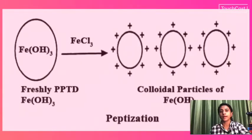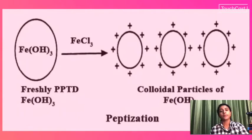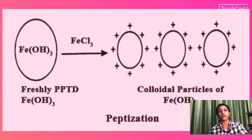For example: ferric hydroxide precipitate with ferric chloride as the electrolyte and peptizing agent is added. Colloidal particles of ferric hydroxide are formed as the precipitate breaks into colloidal-sized particles. This is how we prepare colloids using peptization.